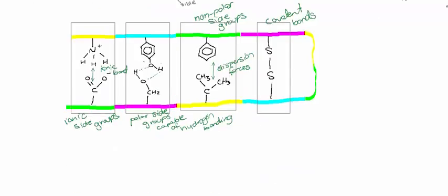We may also have situations where covalent bonds link two sections of the chain together. If we disrupt any of these interactions holding the tertiary structure in place, the protein is going to unravel or lose its shape and therefore denature — it will not be able to perform its function.